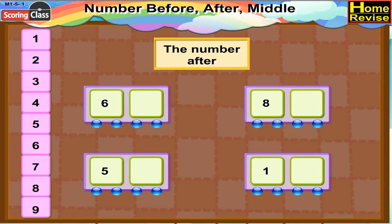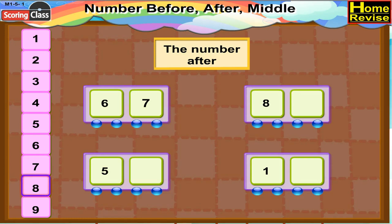Now here is a train. In the first block, 6 is written. After 6 comes 7 in the counting, so we write 7 in the next block. Here we have 8. What comes after 8? You are right, so write 9 in the block.